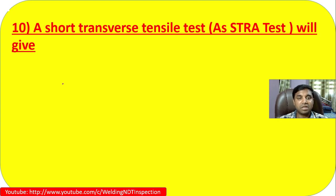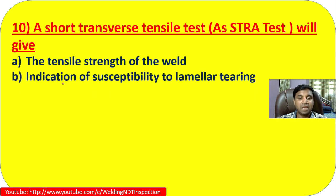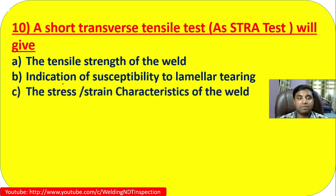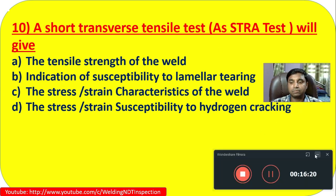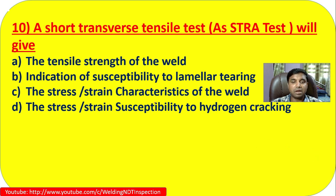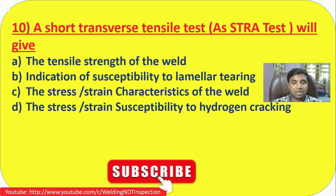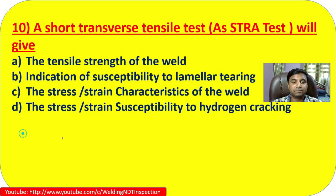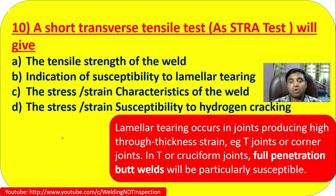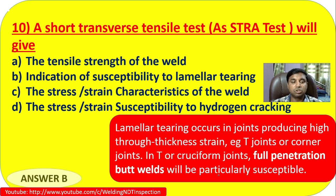Question 10: A short transverse tensile test (STRA) will give what? Options: A) the tensile strength of the weld, B) indication of susceptibility to lamellar tearing, C) the stress-strain characteristics of the weld, D) susceptibility to hydrogen cracking. Lamellar tearing occurs in joints producing high through-thickness strain, such as T-joints or corner joints, and full penetration butt welds in cruciform joints are particularly susceptible. So the answer is B — indication of susceptibility to lamellar tearing.